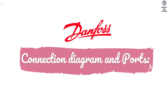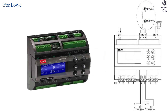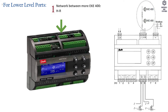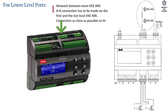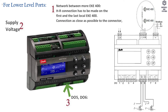Connection diagram and ports. For lower level ports: port 1 is the network between multiple EKE400 units — an HR termination resistor connection has to be made on the first and the last local EKE400, as close as possible to the connector. Port 2 is the supply voltage. Ports D05 and D06 are dedicated for PWM valves.